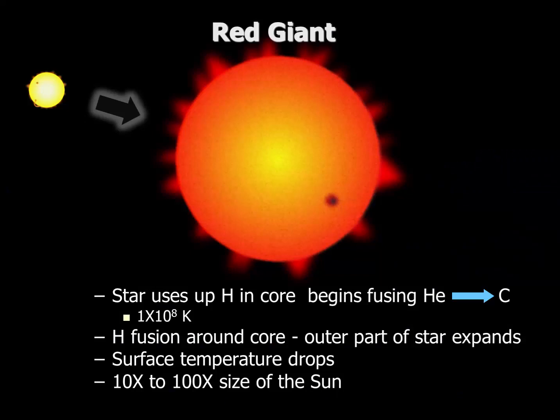On to a red giant. As the star uses up its hydrogen fuel, pressure and temperature increase, and it may begin fusing helium to carbon in its core. This may take temperatures of 100 million Kelvin. Hydrogen fusion may begin around the core, causing the outer parts of the star to swell and expand. As the outer parts expand, surface temperature drops, giving the characteristic red surface color.